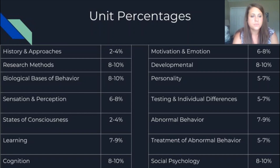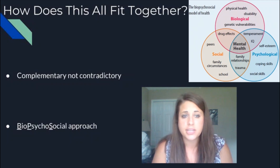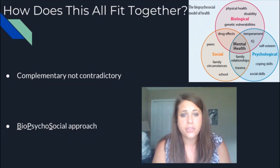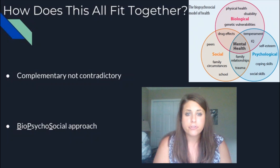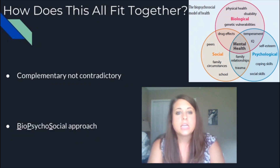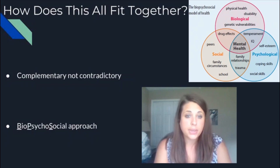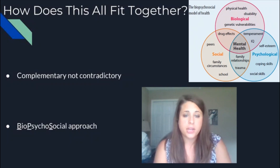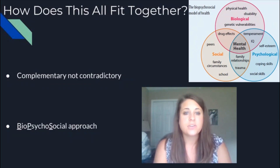Besides the units and percentages, how does this all come together? There are 14 units and a lot of information — how do we put it all together into something that makes sense? I want to emphasize that pretty much everything we're going to talk about in psychology is going to be complementary, not contradictory. There are going to be layers to our understanding. For example, with the Venn diagram shown, when we look at mental health, we can look at biology — different neurotransmitters and things happening in our brain can influence our mental health — but that doesn't give us the whole picture.